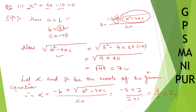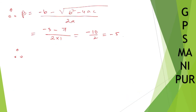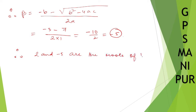So we got 2 and minus 5. Therefore 2 and minus 5 are the roots of the given equation. That's all, thank you so much. We will meet in the next video.